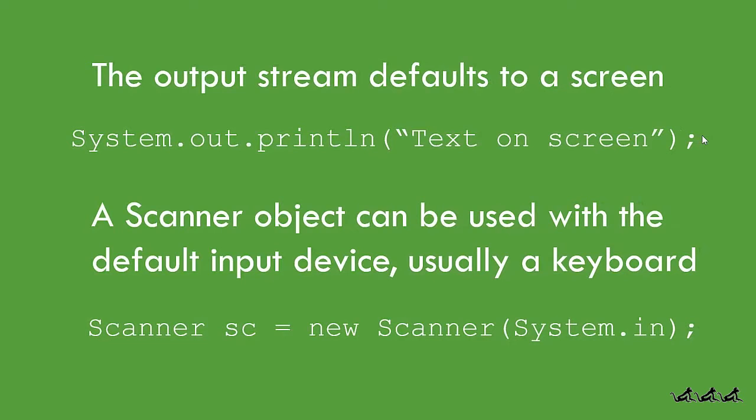You've been using system.out.println to put data on the screen — that's a stream connected to the default output device, system.out, which is your screen. You've also probably used the scanner object to bring data in from the keyboard. You instantiate that object and point it to system.in, which by default is the keyboard. We can use those concepts now to read data from a file and write data to a file. So let's have a look at some code.